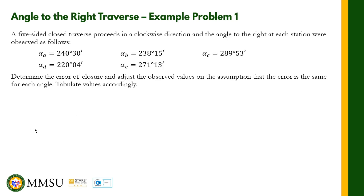A five-sided closed traverse proceeds in a clockwise direction, and the angle to the right at each station — alpha A, alpha B, alpha C, alpha D, and alpha E — were observed as shown in the slide. We need to determine the error of closure and adjust the observed values on the assumption that the error is the same for each angle, then tabulate the values accordingly. Since the traverse proceeds clockwise, the sum of the angles to the right should be (n+2) times 180 degrees.